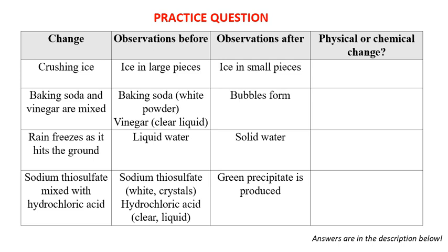Let's do some examples. For physical or chemical changes, you need to ask yourself questions. For a physical change, ask: is something new being formed, or is there a reaction? If the answer is no, it is a physical change. If something new is being formed and there is a reaction, it is a chemical change.